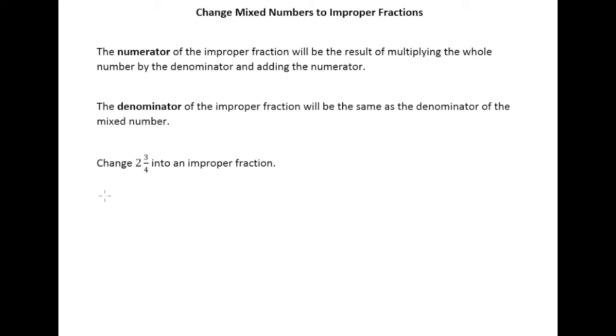So for our situation the whole number is 2 and I'll multiply that by 4 which is the denominator of the mixed number and then we'll add the numerator which is 3. So of course 2 times 4 is 8 and then 8 plus 3 is 11. So 11 is the numerator of our improper fraction.